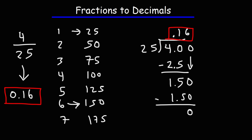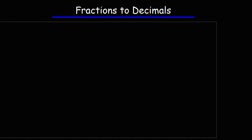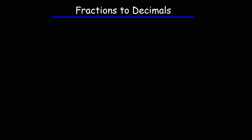Now let's move on to our next example. Try this one: 7 over 8. So we have an 8 on the outside, a 7 on the inside. 8 doesn't go into 7, so we're going to add a 0. But how many times does 8 go into 70?